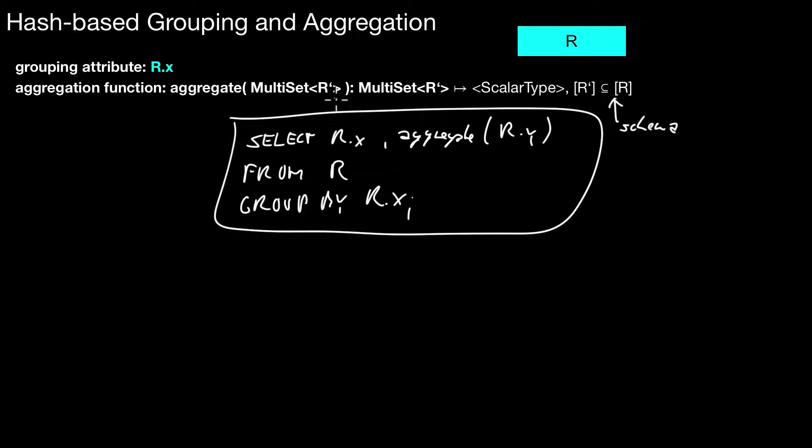A multiset is passed to the aggregation function. And the output is some scalar type, typically. Again, in theory, this could be a more complex type - it could be another record type. But let's focus on the simple case here. Input is a multiset of R', which is schema-wise a subset of the original schema R. And the output is a scalar type. How do we implement that?